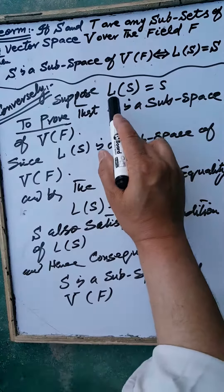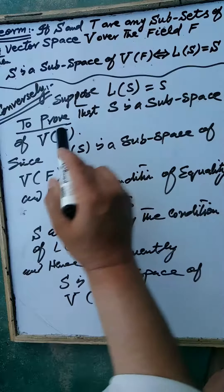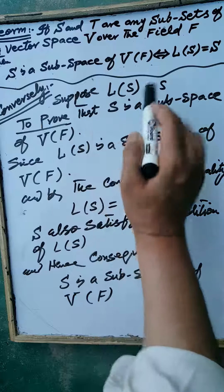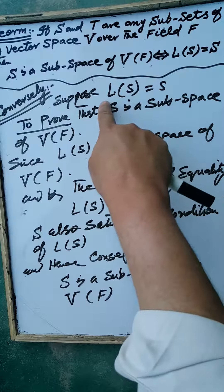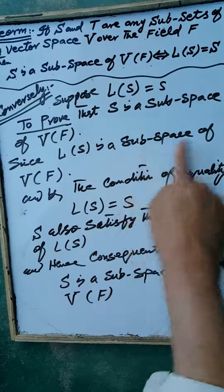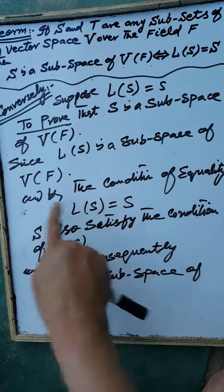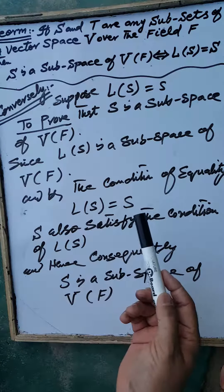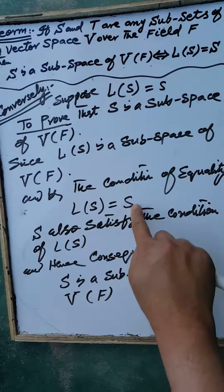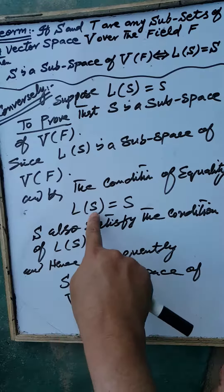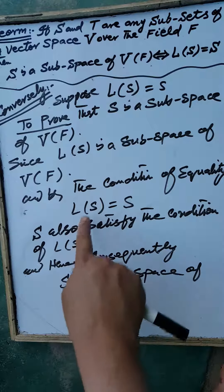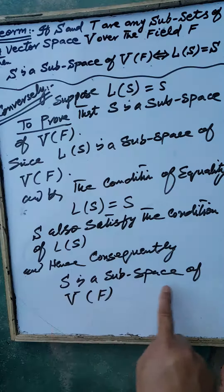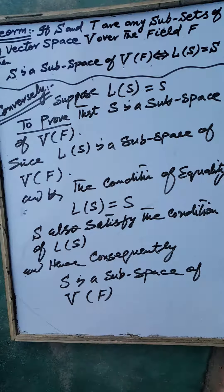Conversely, suppose that the linear span of S is equal to S. To prove that the set S is a subspace of the vector space V over the field F: since the linear span of the set S is a subspace of the vector space V over the field F, then by the condition of equality — the linear span of S equals S — the set S also satisfies all the conditions of the linear span of S. Therefore the set S is a subspace of the vector space V over the field F.